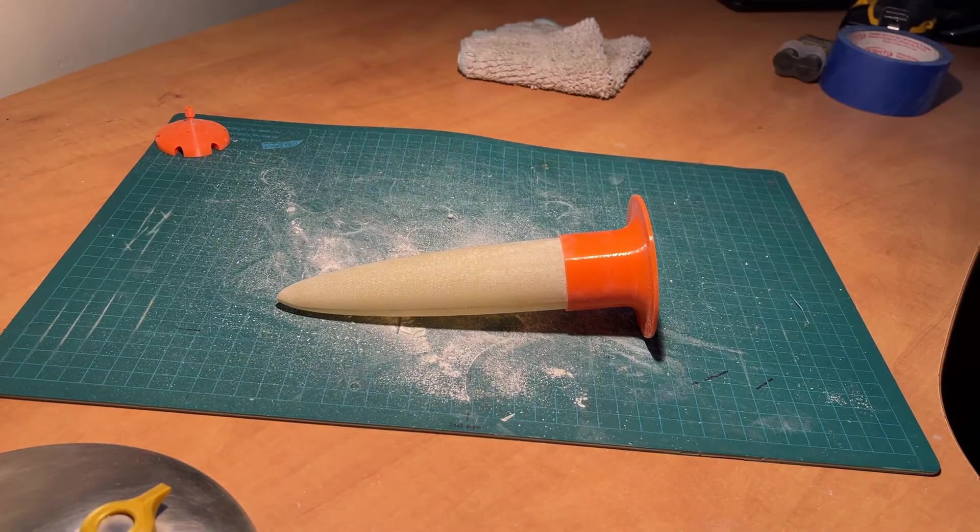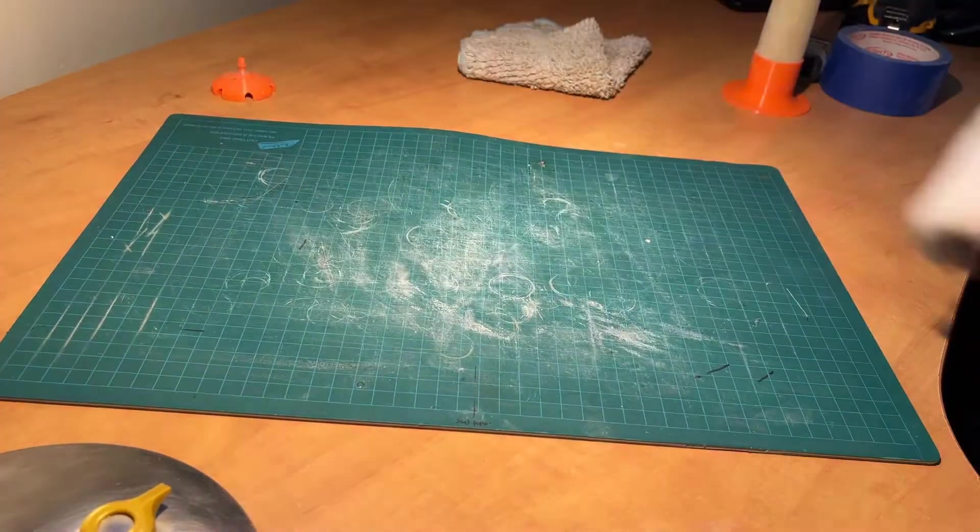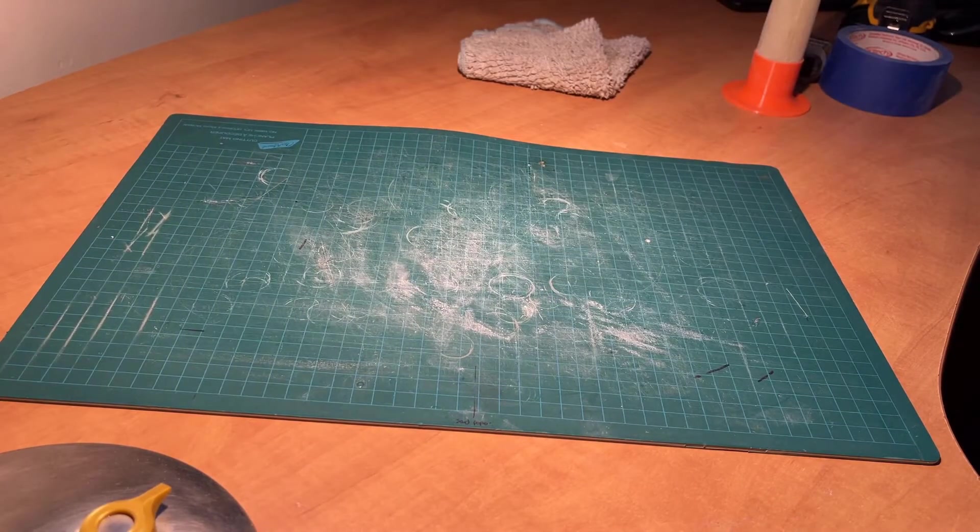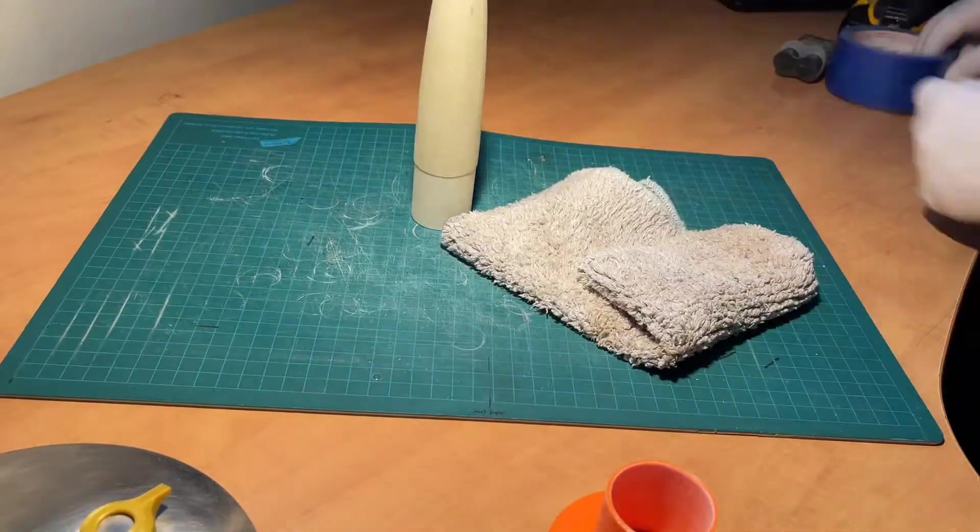When the nosecone shape is smoothed out, clean the area with the vacuum and prepare the cone by applying blue painter's tape to the fuselage interface as shown.